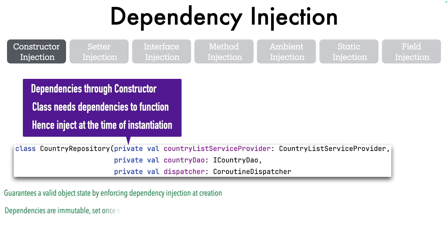Another advantage is that dependencies are immutable — set once via the constructor. So if you want to ensure that these dependencies are not changed later, constructor injection is the good approach. It also enforces the dependency inversion principle by making dependencies explicit. Anybody who looks at the constructor will immediately understand what the dependencies of that particular class are, making it very easy to read and understand the code.